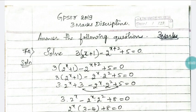Hello friends, today we are going to discuss 2019 GPS TR 3-mark descriptive questions. In this video you are going to have questions from 74 to 91, and each question is for 3 marks. You need to attempt all the questions, so I'll go through all the questions with their answers. Just see all the slides without skipping any answer.